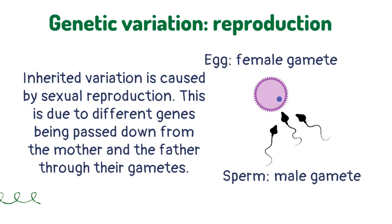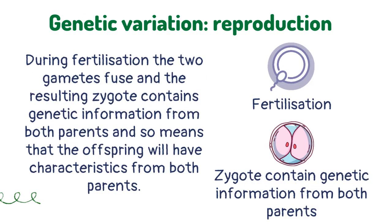Inherited variation is caused by sexual reproduction. This is due to different genes being passed down from the mother and the father through their gametes. During fertilization, the two gametes fuse and the resulting zygote contains genetic information from both parents, meaning that the offspring will have characteristics from both parents.